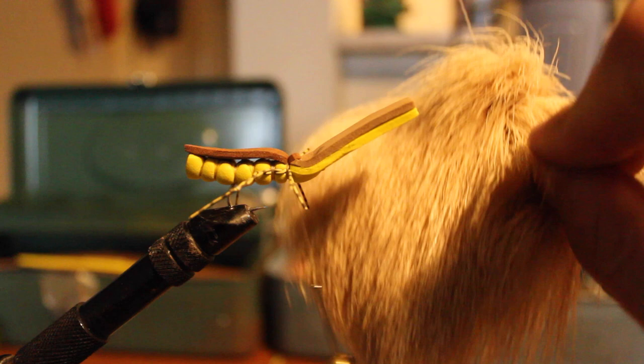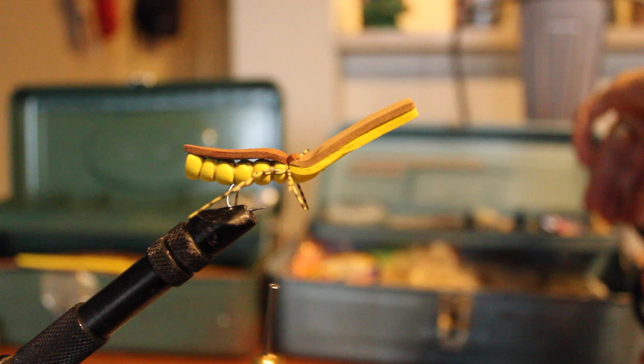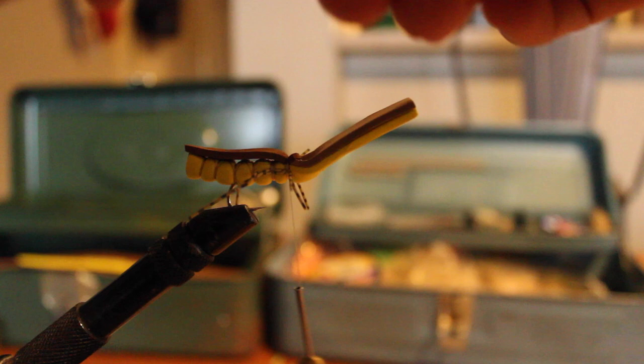Now we're going to take some elk hair. I've got a lighter bleached elk hair here. And we're just going to get a little section. And I'm just going to clip it and get that end nice and straight. And I'm going to tie in there.